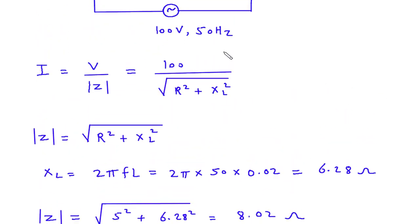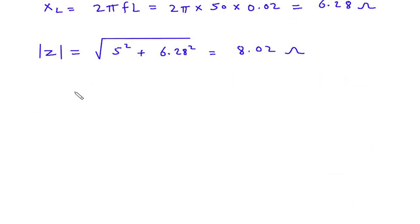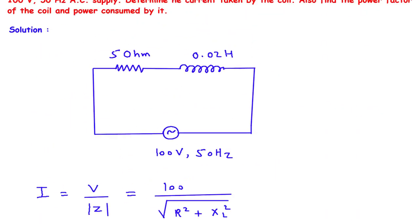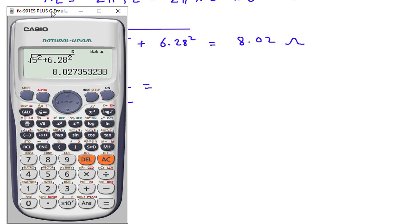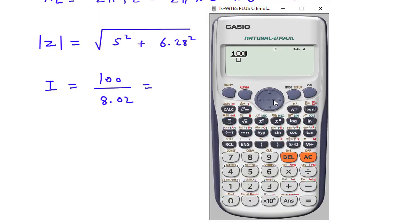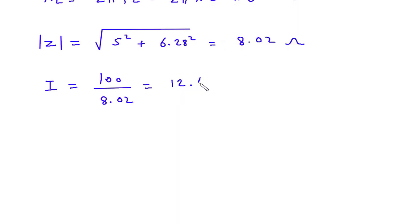Now we have the value of voltage V and impedance Z, so we can find the current I. I is equal to V divided by Z, which is 100V divided by 8.02 Ohm, giving 12.46 Ampere. Therefore, the current I is equal to 12.46 Ampere.